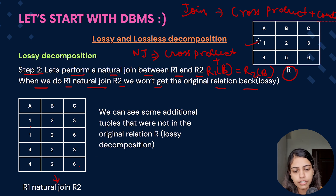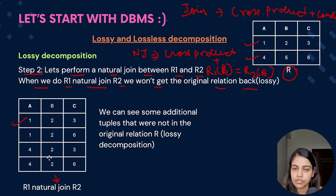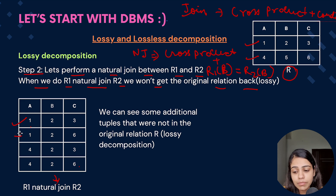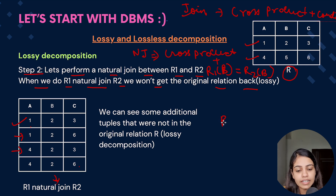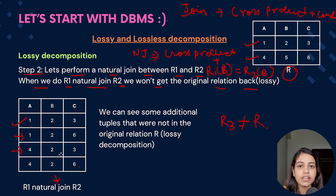The original relation had tuples (1,2,3) and (4,5,6). After the natural join we have (1,2,3), (1,2,6), (4,2,3), and (4,2,6). We can see that (1,2,3) is present but (4,5,6) is not present. Data is lost, and some additional rows are present. So R3 is clearly not equal to R — some data is lost and extra data is present. This is a lossy decomposition.